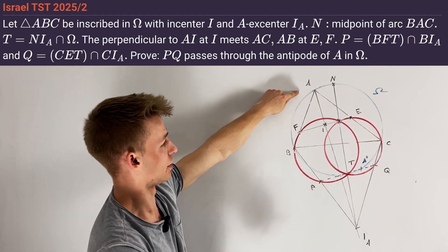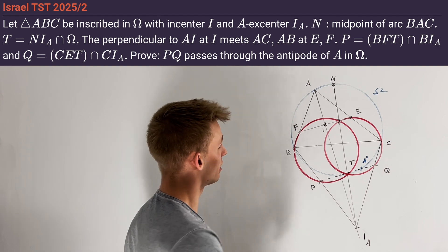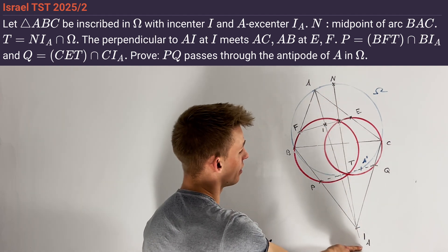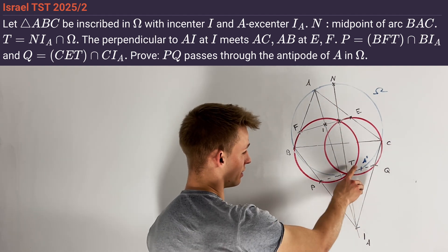We intersect the line NI_A with Ω again to get a second point T.